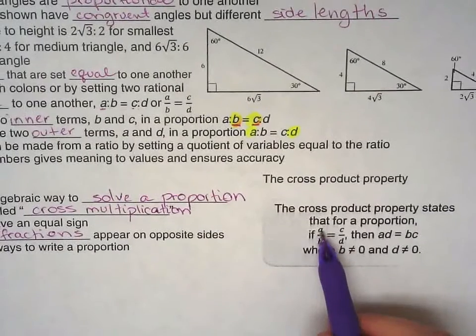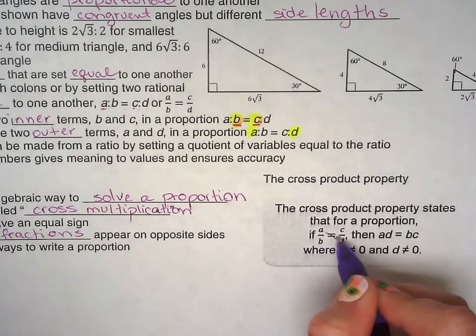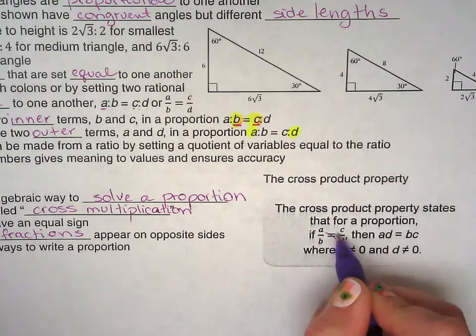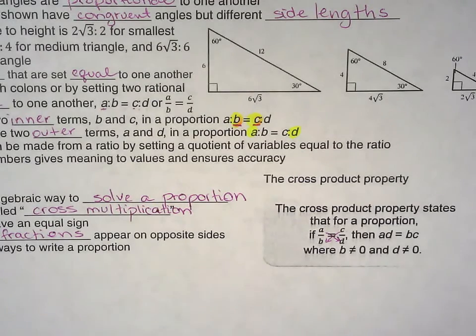And this is an example. So A over B equals C over D. That means A times D equals C times B, right there. As long as the denominators are not zero. There you go.